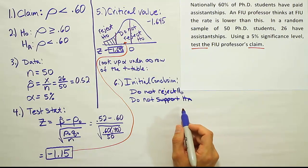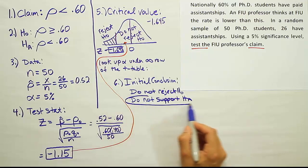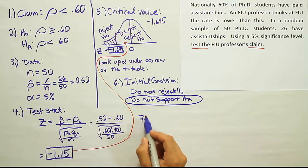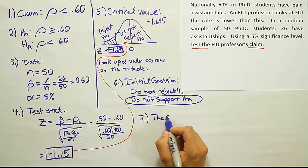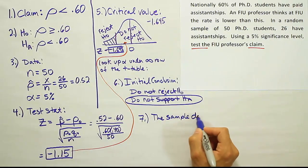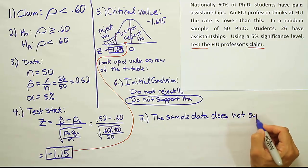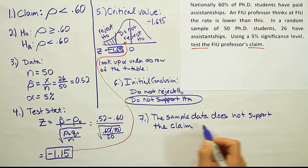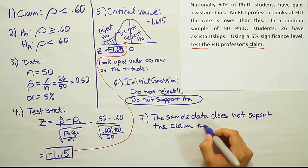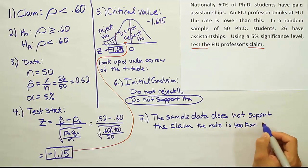So now the question is, which one was our claim? Was it HA or H0? When I look back at the claim, I see that it's HA. So we should use the wording that's associated with HA down here. So our final step, the wording of the final conclusion is going to say that the sample data does not support the claim. The sample data does not support the claim that the rate is less than 60%.